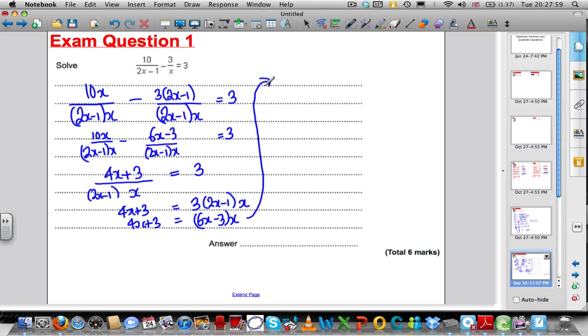I'm going to keep going over here, it's a long question. 4x plus 3 is therefore equal to 6x times x, which is 6x squared, and minus 3 times x, which is minus 3x.